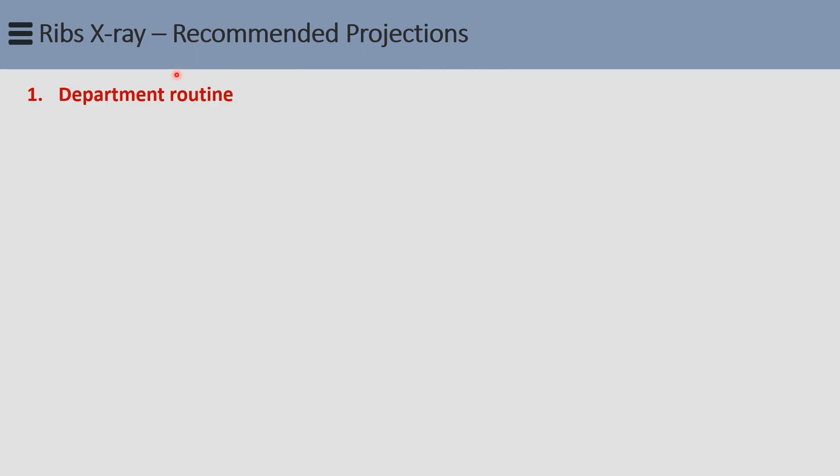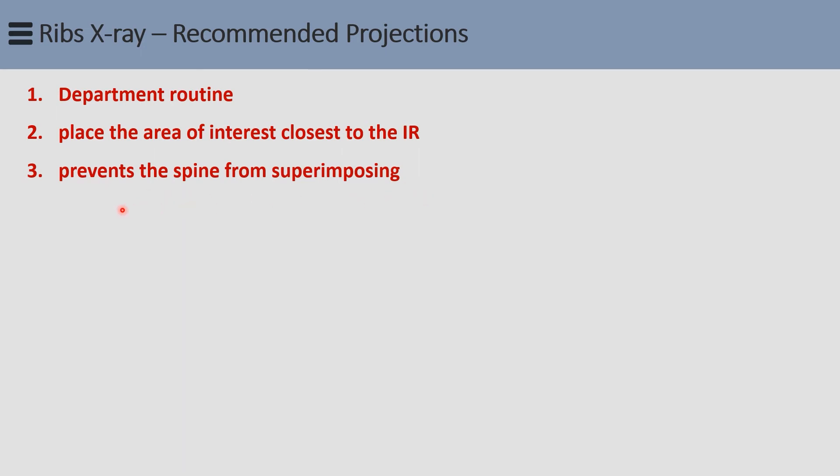Now that you have the patient history and know the location of the complaint — whether the pain is posterior, anterior, lateral, or above or below the diaphragm — the next step is to choose the proper technique and position. Department routines may vary depending on the preference of radiologists. One recommended routine is: first, select the projections that will place the area of interest closest to the image receptor and rotate the spine away from the region of interest to prevent superimposition.